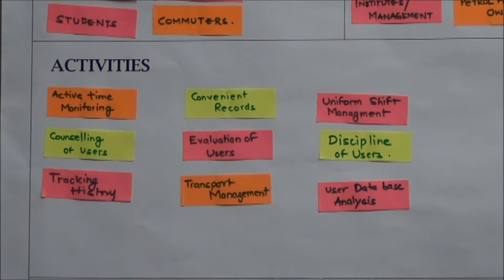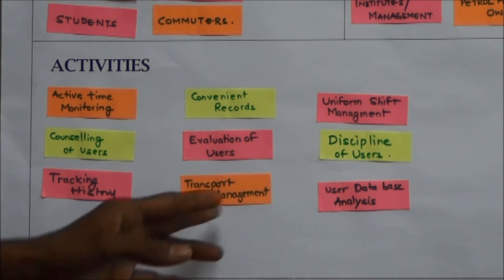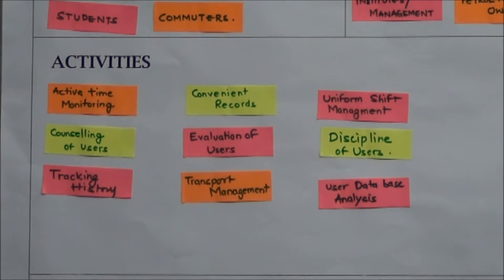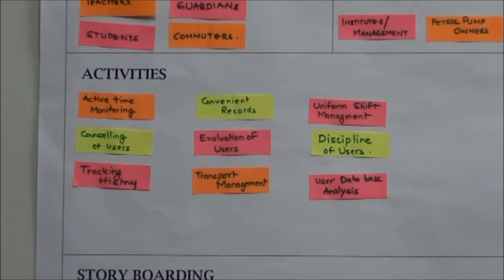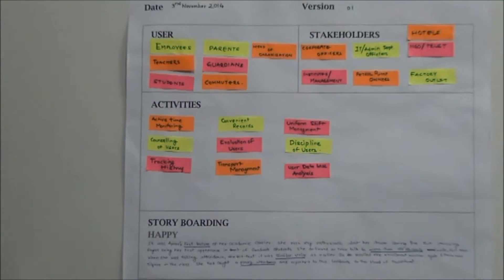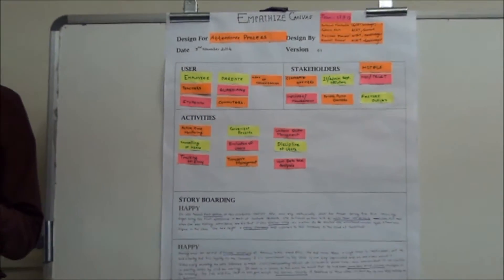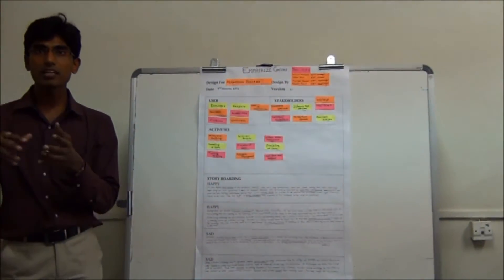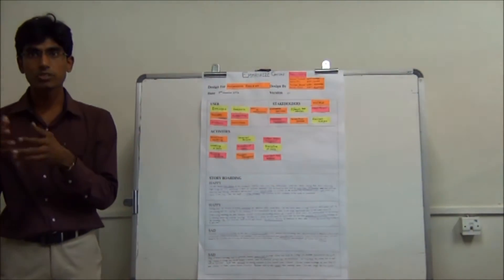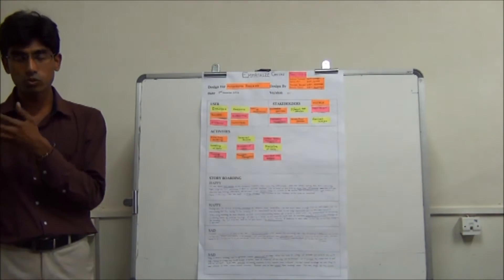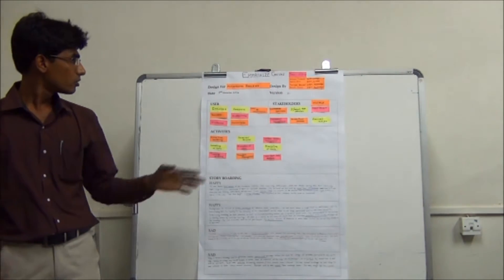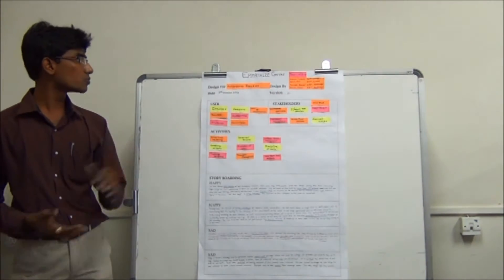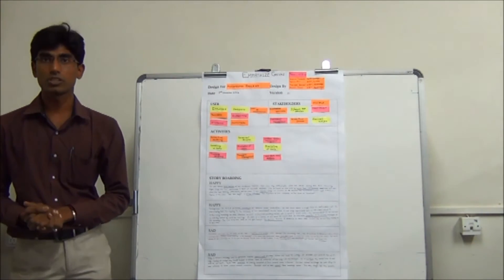Further activities include evaluation of users, transport management, and uniform shift management. We have seen in pharmaceuticals there are various shifts — first shift, second shift, general shift, or night shift. To manage these shifts in uniformity, we can use this attendance process.